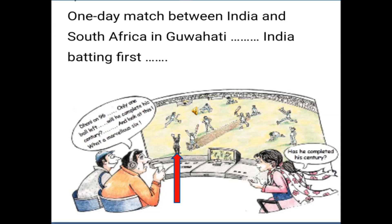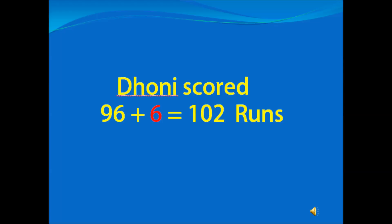He has not only scored a century, but he has scored 2 more runs than the century. So hip hip hooray! We can say Dhoni scored 96 plus 6, that is equal to 102 runs.